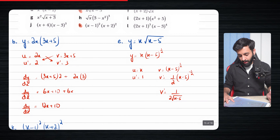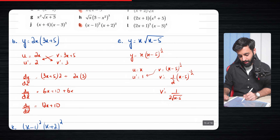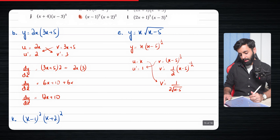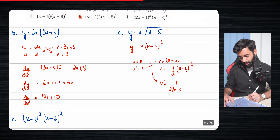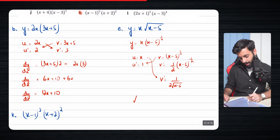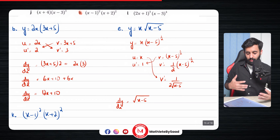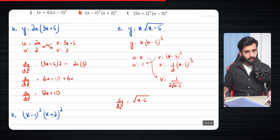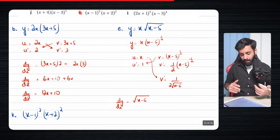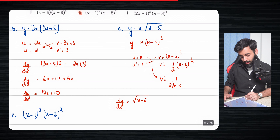You can also write v prime as 1 over 2√(x−5). When approaching the final answer, it's best to start writing it as a square root. So v·u′ is just √(x−5), and u·v′ is x over 2√(x−5). I'll note that switching between power-half notation and square root notation is just my personal method.